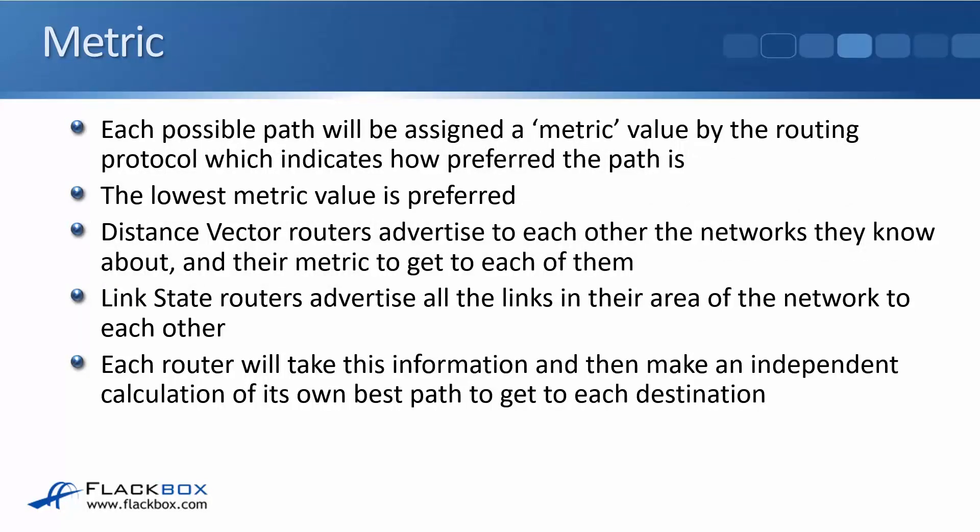Each possible path will be assigned a metric value by the routing protocol, which indicates how preferred the path is. The lowest metric value is preferred — high numbers are bad, lower numbers are better. An easy way to remember this is with OSPF: the name of the metric is cost, and just like if you go shopping, the lower the cost of something, the better it is.